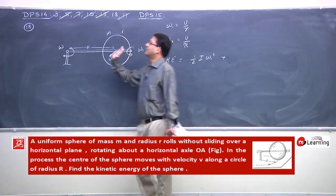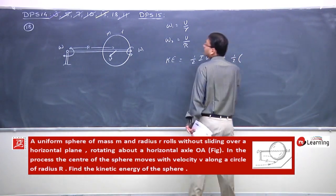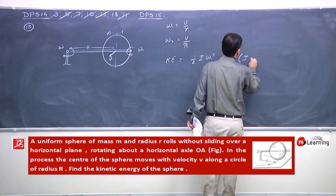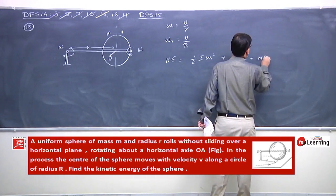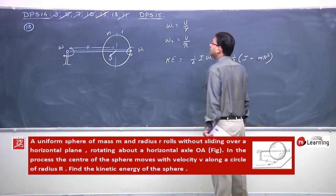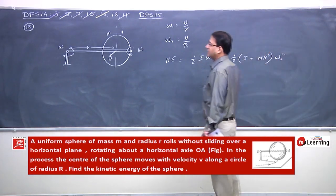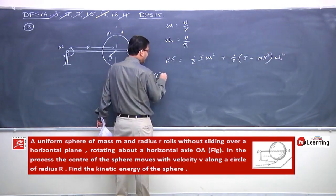Aur is axis ke about jo kinetic energy iski wajah se hogi, half, so is ke about moment of inertia I plus small m into R square into omega 2 square, plus kinetic energy is half.